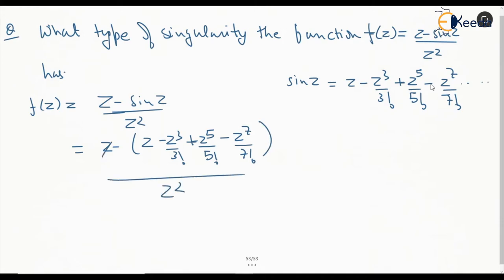Clearly this z and this z will get cancelled and we will be left with z with third power, fifth power, seventh power and so on. This will become z by 3 factorial minus z to the power of 3 by 5 factorial plus z to the power of 5 by 7 factorial and so on.